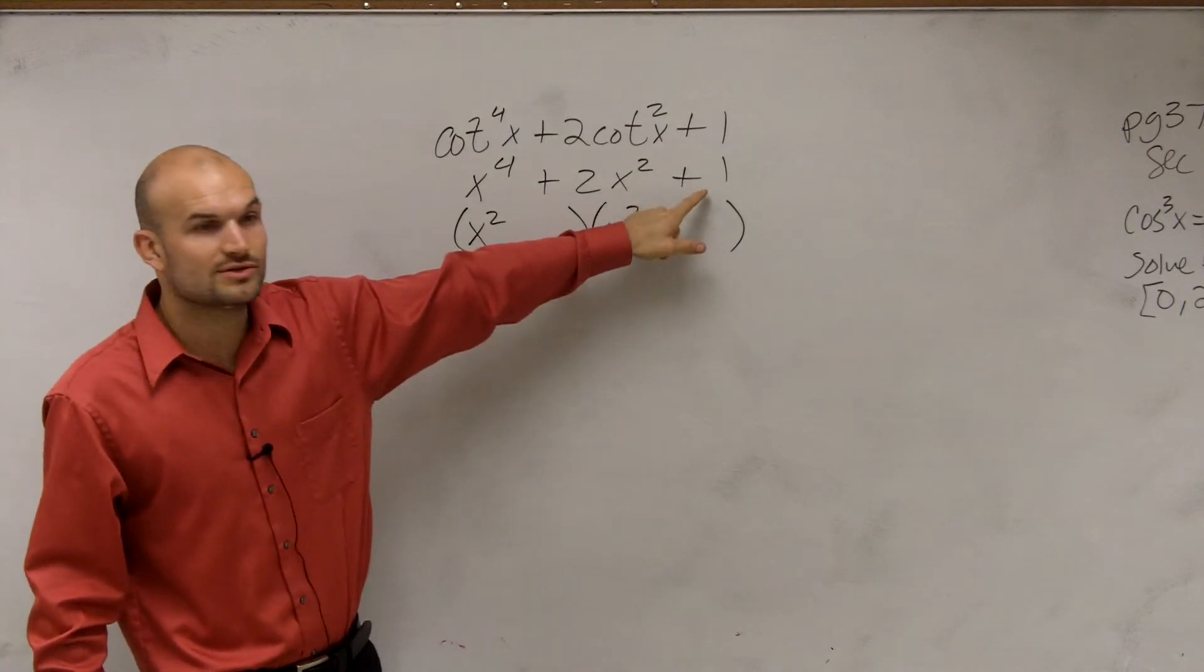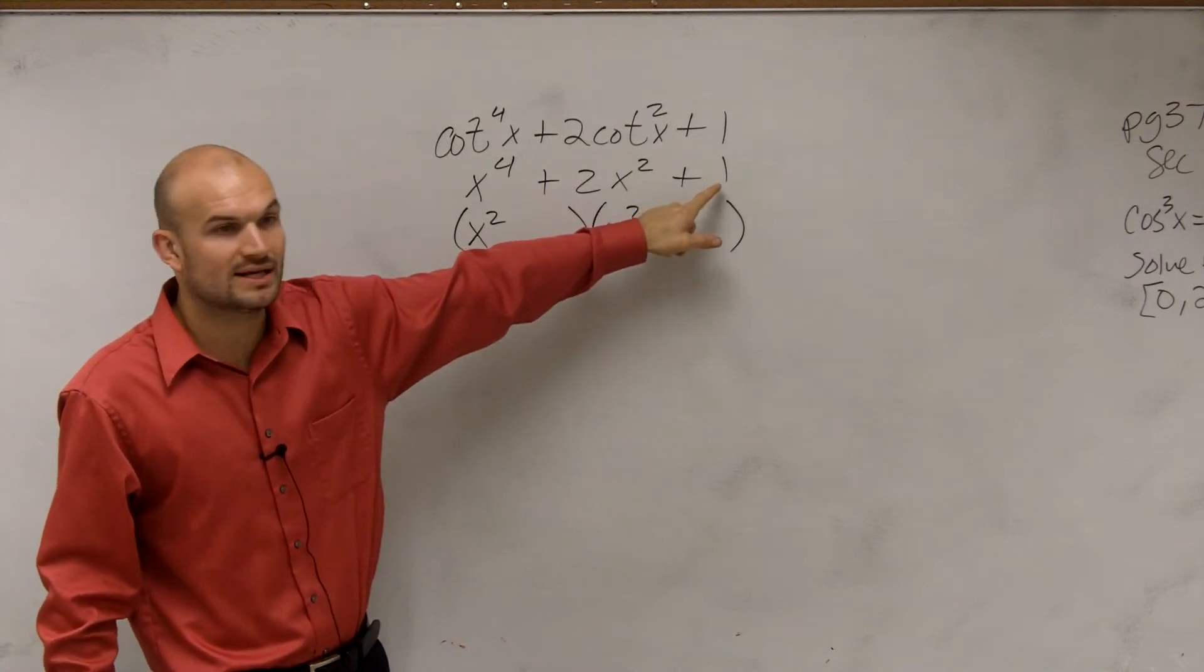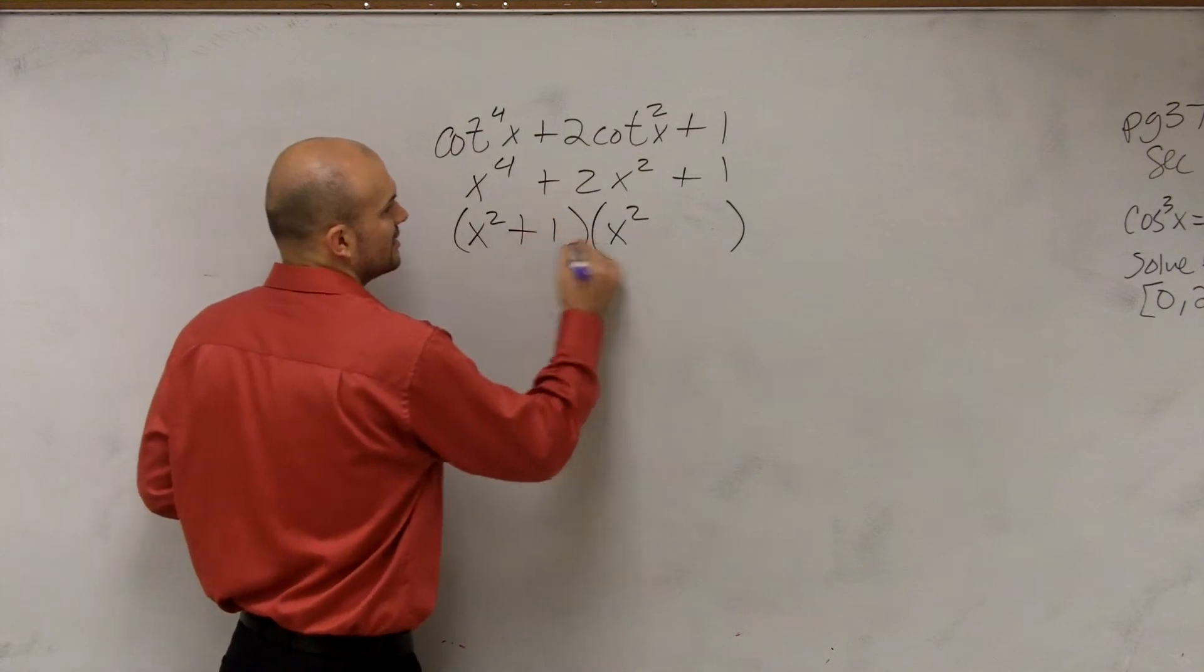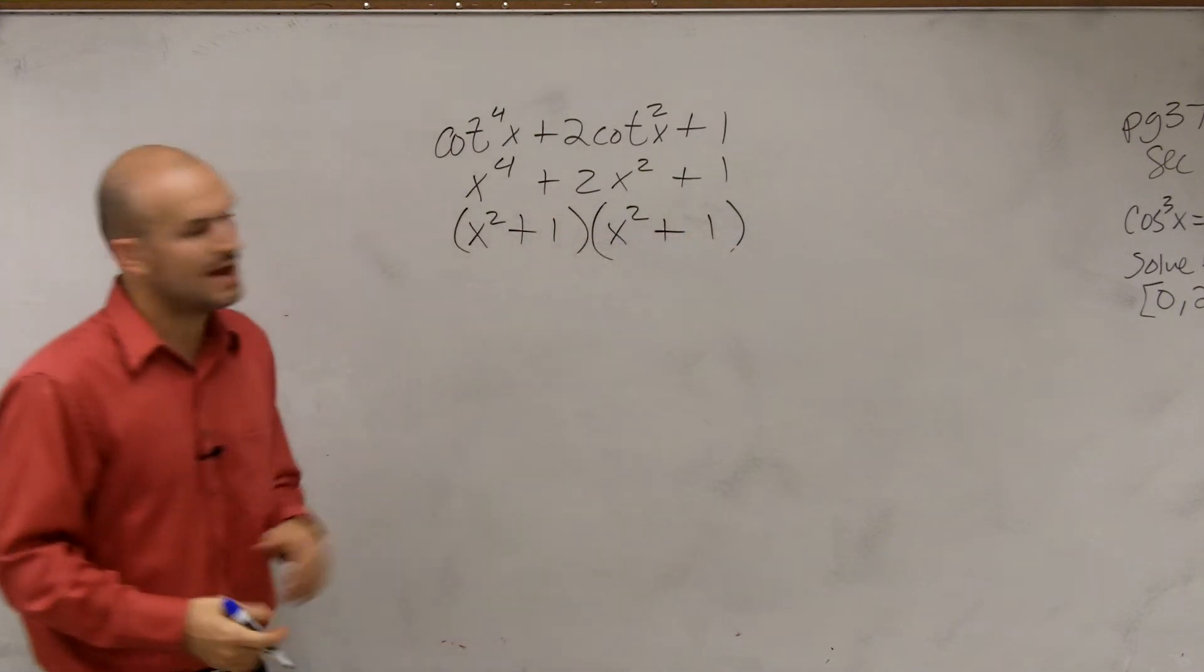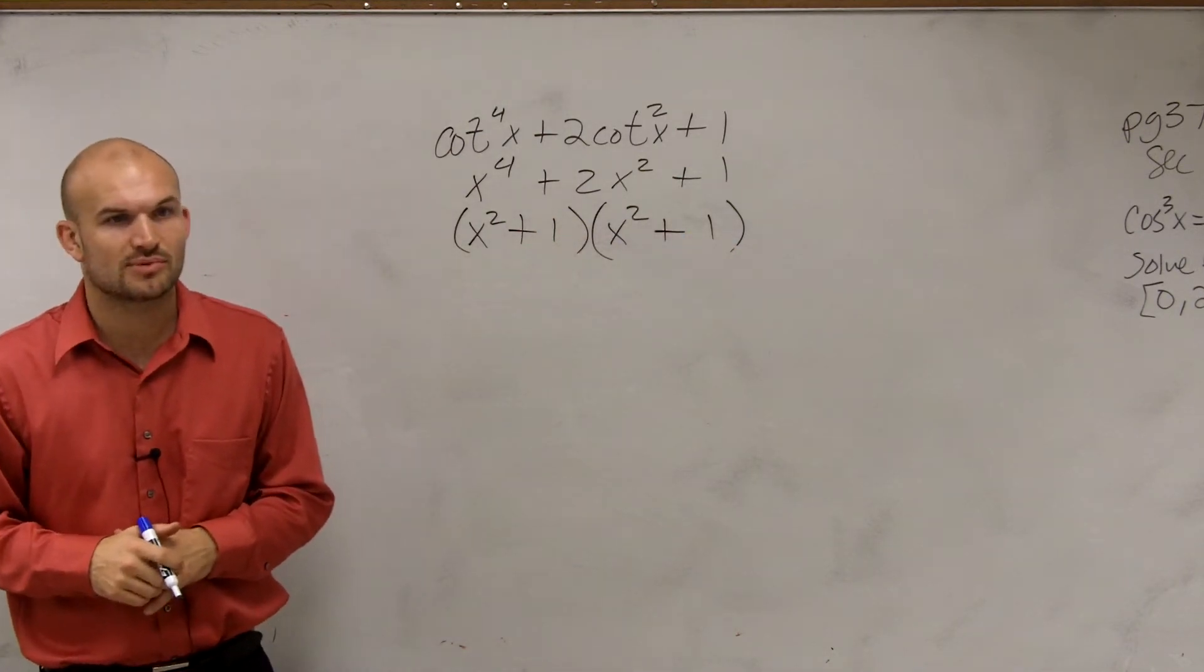And then what two numbers last that you're going to add, multiply to give you 1, and then add to give you 2? Well, you could easily say that really what I have is x squared plus 1 times x squared plus 1.